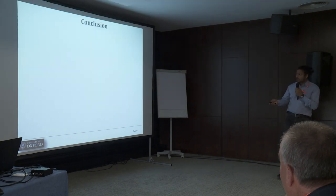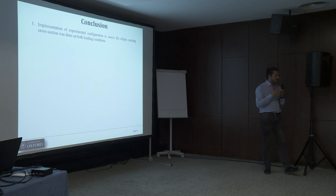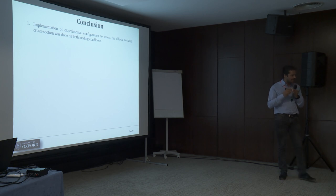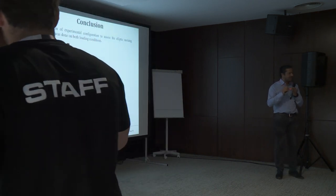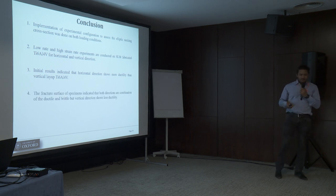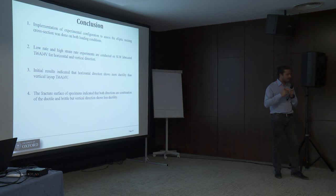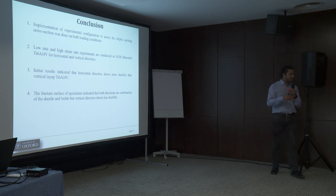That brings us to the conclusion. The major takeaway is the experimental setup to assess the elliptical cross-section, which we found in the literature and successfully replicated for both low rate and high rate conditions. This is not just limited to additively manufactured titanium alloys — we have also tried it for pure titanium, which was extremely anisotropic, and successfully estimated the results. In future, I'll be performing microstructure studies on pre-strained samples and comparing pre-test and post-test results to come up with a better understanding of the differences and complement all the mechanical responses.